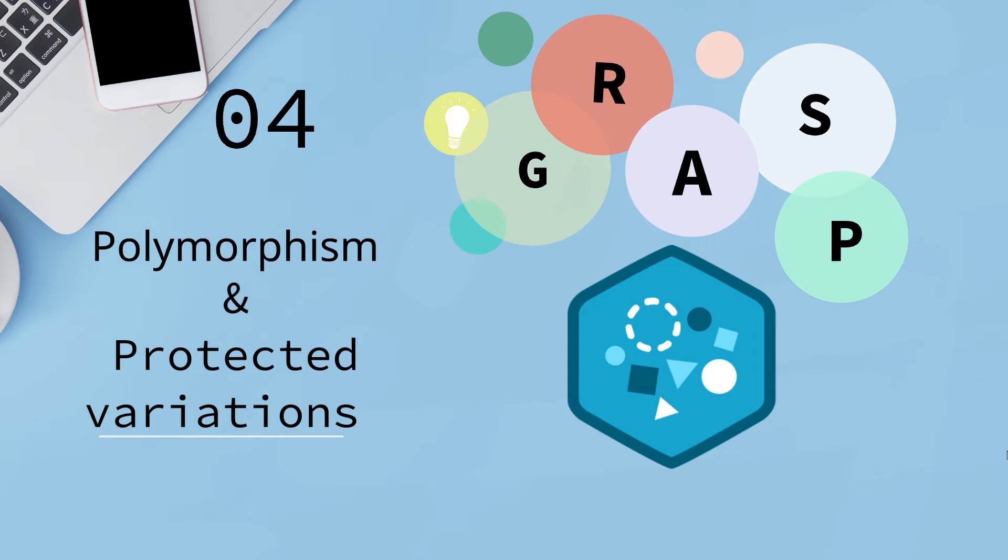We've been talking about GRASP principles in the last videos and the importance of having clean code. There are two last and today we're gonna talk about those: polymorphism and protected variations.